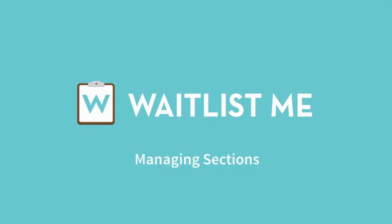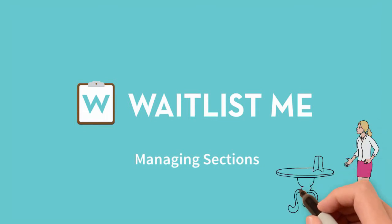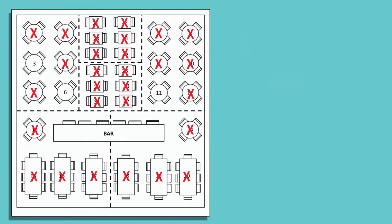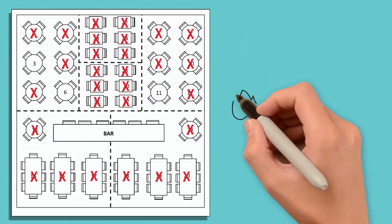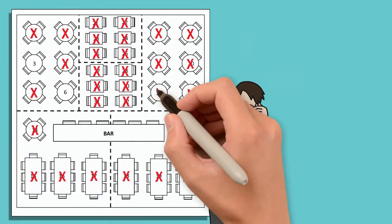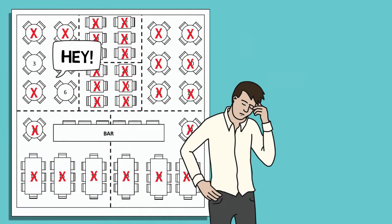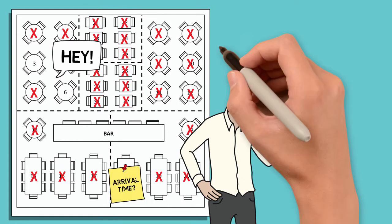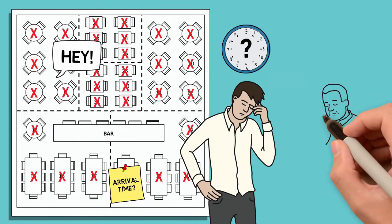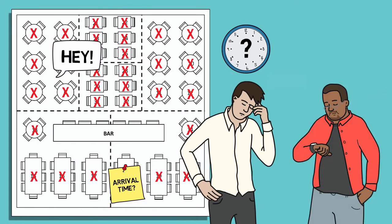Waitlist.me makes it easy to manage your tables and your sections so you'll always know where to seat your next customer. The old way of scribbling notes on a paper floor plan is slow and inefficient. You can see which tables are open, but are your servers getting their fair share of the work? Do you even know when each party arrived or how long they've been there? If your tables are full, how long will the next customer have to wait? All you can do is guess.